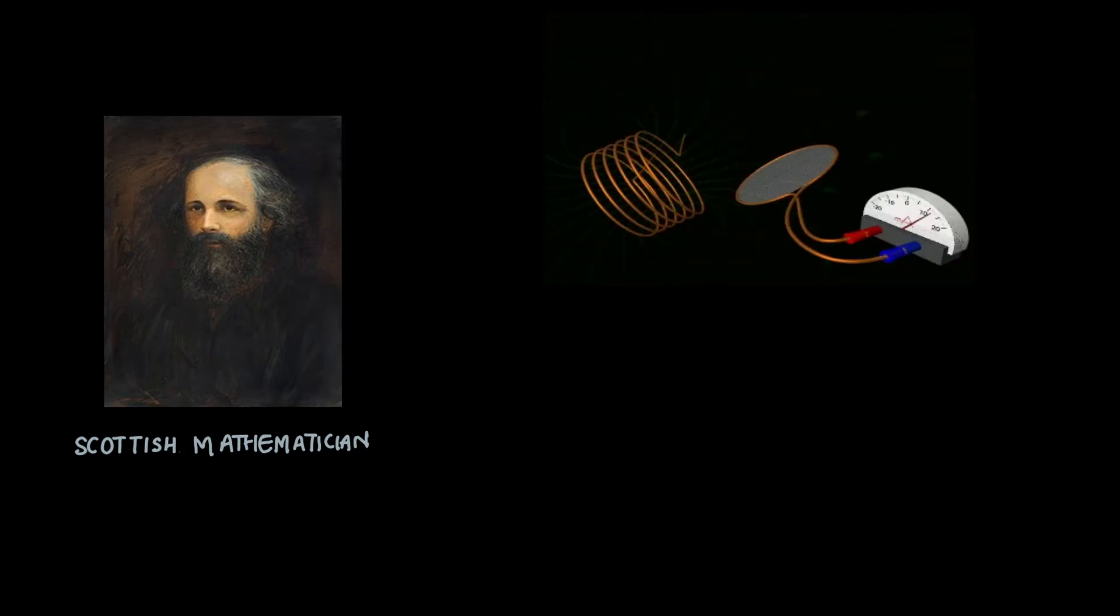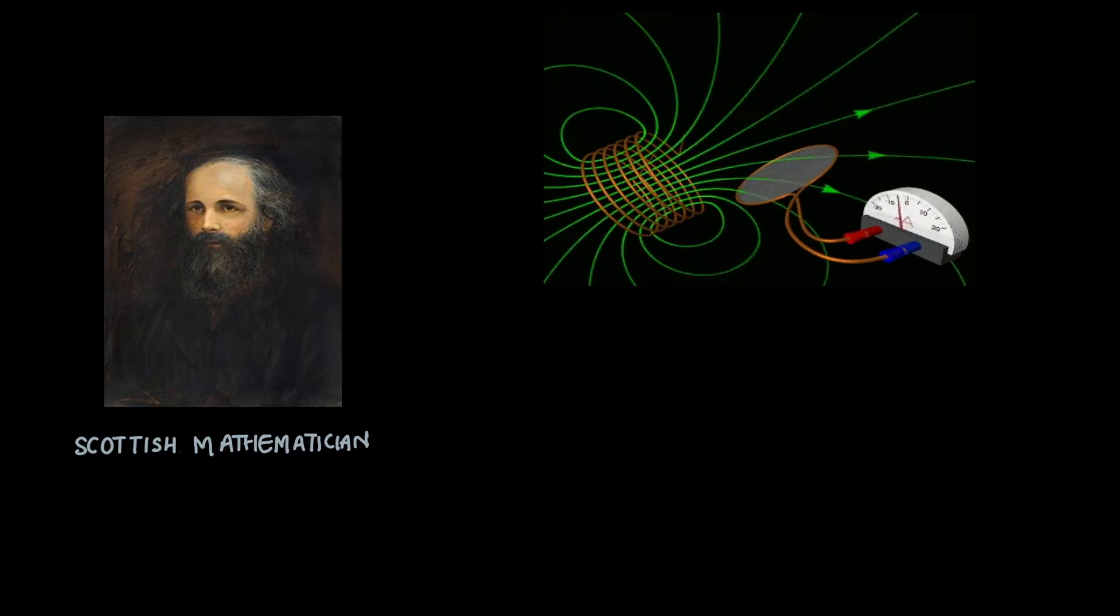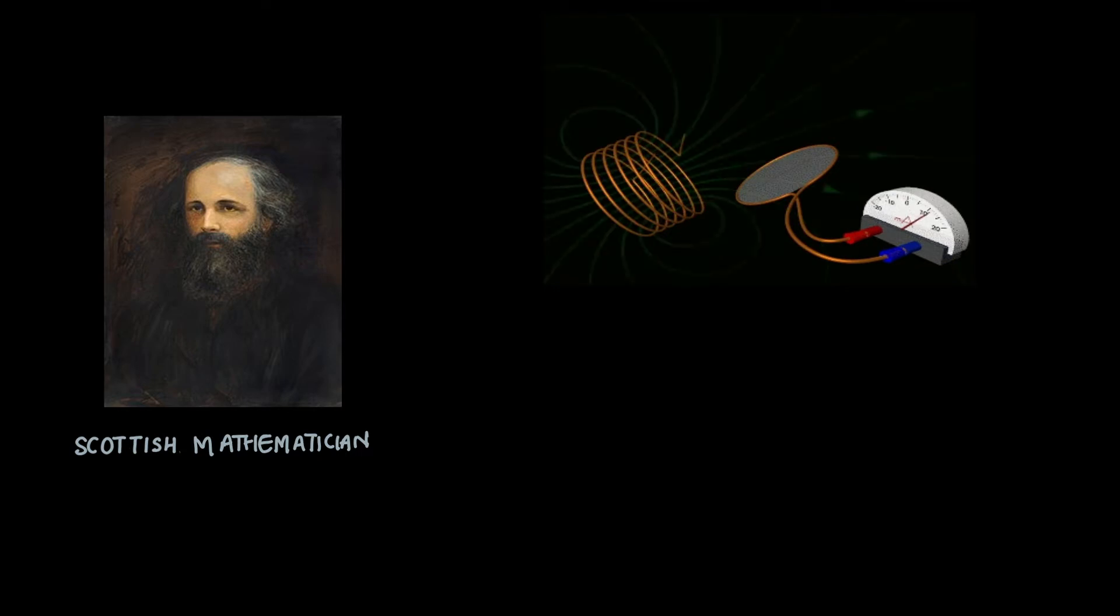Maxwell, a Scottish mathematician and scientist, was working on putting together the mathematics of electromagnetism, combining the experimental and theoretical results of Gauss, Ampere, Faraday, and others before him.